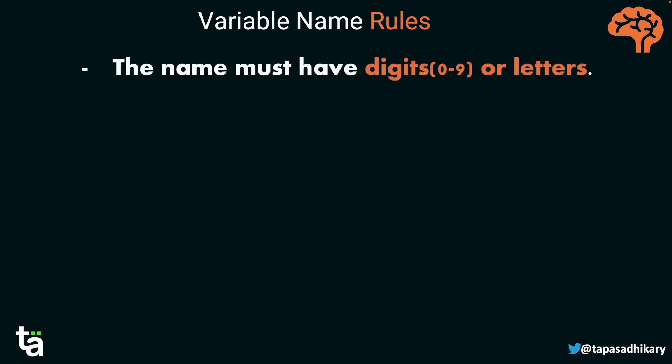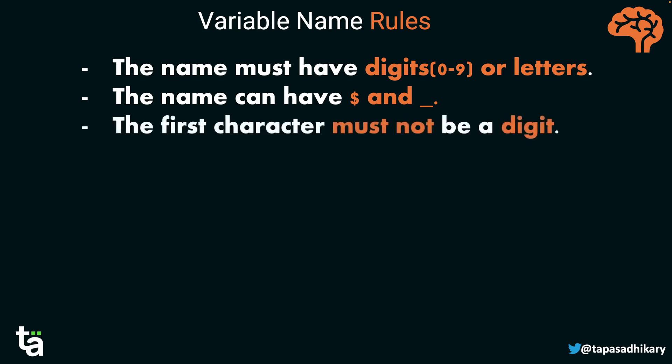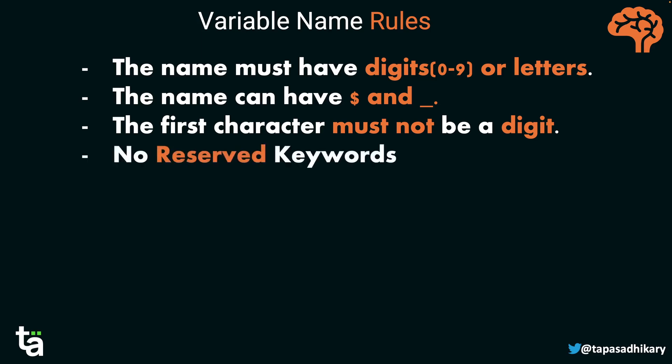When you create variables, there are four rules to keep in mind. First, the name must contain only digits or letters. Second, special characters are allowed, but only dollar sign (`$`) or underscore (`_`). Third, the first character must not be a digit. Fourth, you cannot use reserved JavaScript keywords — like `let` or `const` — as variable names.